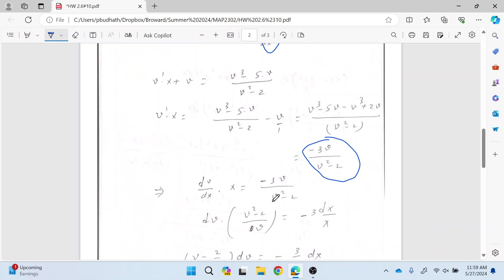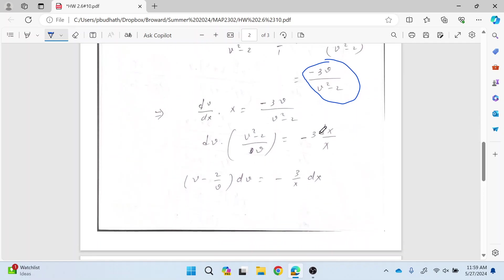Now we're going to separate all the v terms on the left side and all the x terms on the right side. I just keep this negative three on the right side here, and then I bring this v square minus two on the top to the left side and v on the bottom side. So just divide v square by v. That gives you v minus two over v.